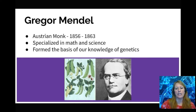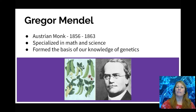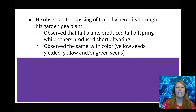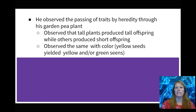Our first scientist is Gregor Mendel. He was in the mid to late 1800s, he was a monk, and his focus was the garden pea. He specialized in math and science, and when he was growing the peas he started to notice patterns. He is known as the father of genetics for laying the groundwork for everything.